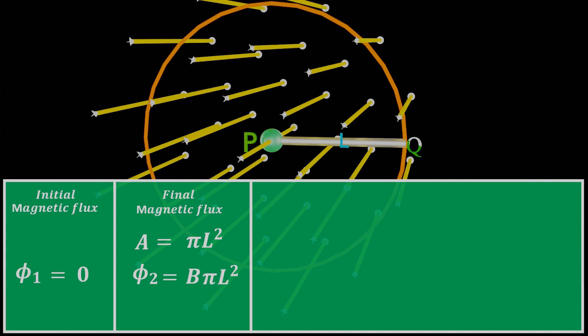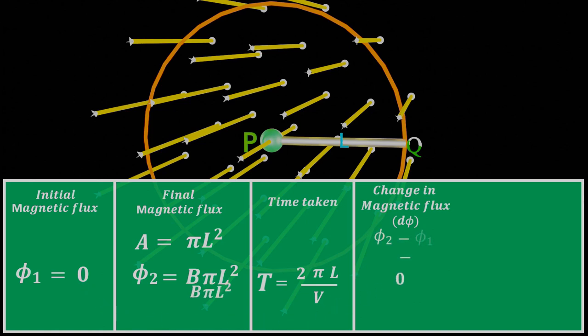Now there will be a time taken T by a rod to make one complete rotation, which we can write as circumferential distance 2πL travelled by a point Q divided by velocity V. So, the change in magnetic flux linked to a rotating rod is equal to final magnetic flux φ₂ minus initial magnetic flux φ₁ that is BπL².